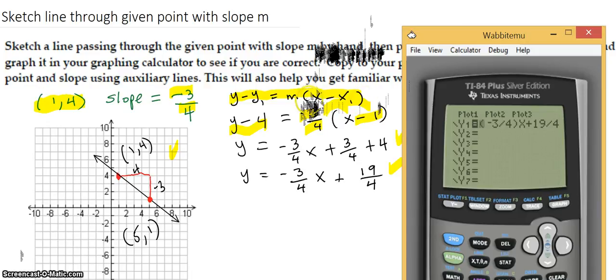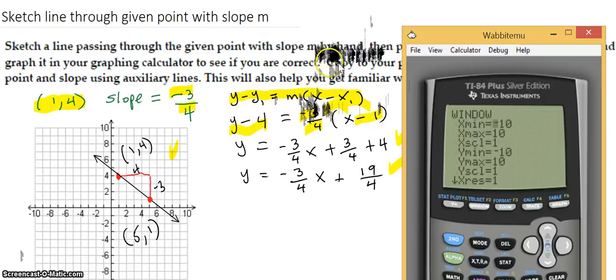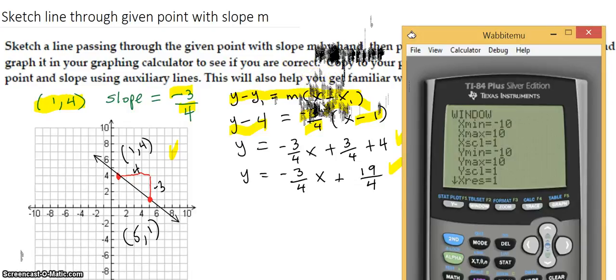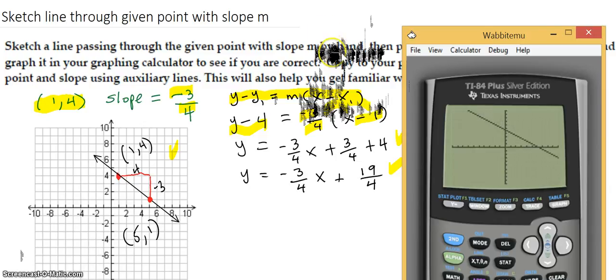I already set up the window. My original window here was the standard negative 10 to 10 grid. So I set my window to negative 10 to 10, negative 10 to 10. I could do that by doing zoom number 6 standard. That puts it into the standard window. So I'm ready to graph. Hit the graph button and I get this.